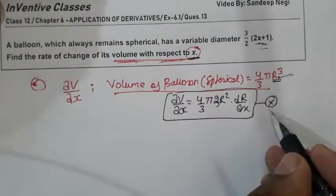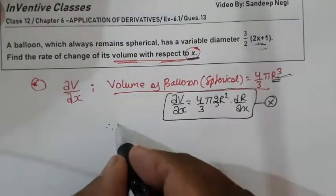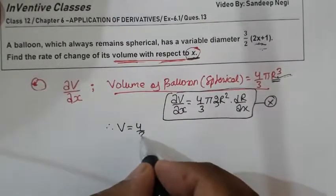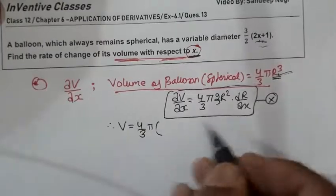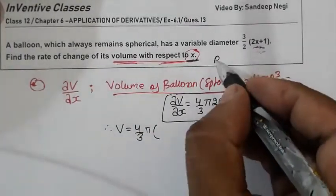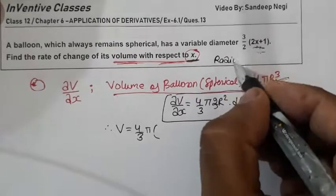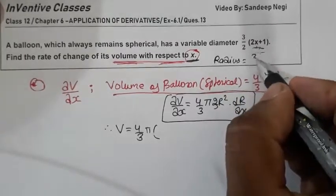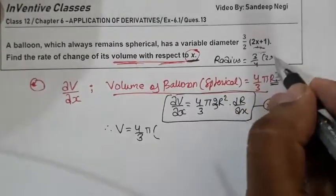So instead of this approach, what will we do here? We do not have to see volume, this diameter. If this value is, this value is our 3/4(2x+1).